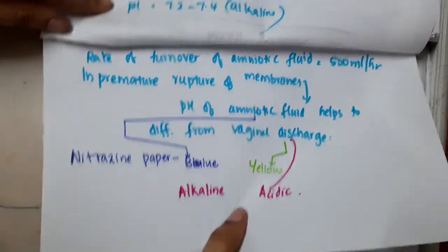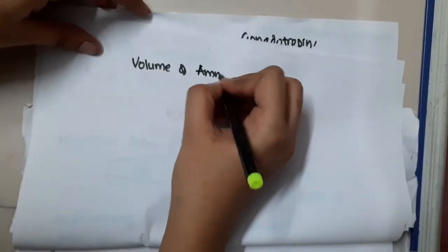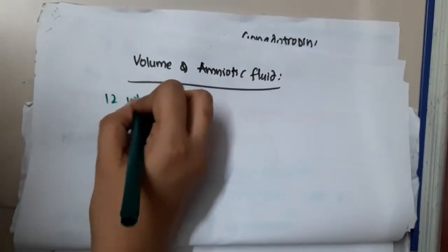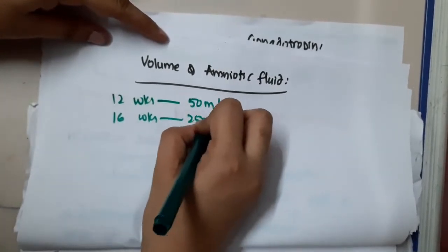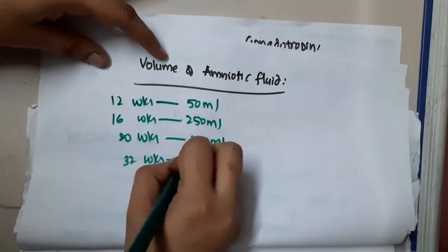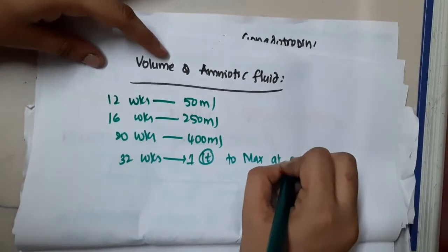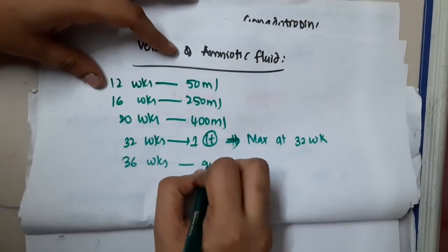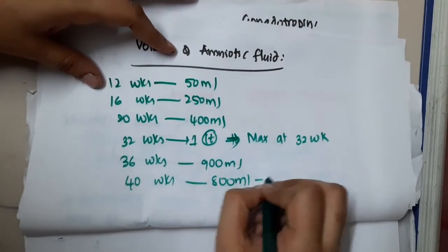The volume of amniotic fluid: at 12 weeks of gestation it is 50 ml, at 16 weeks it is 250 ml, at 20 weeks it is 400 ml, at 32 weeks it is 1 liter which is the maximum, at 36 weeks it is 900 ml, and at 40 weeks it is 800 ml, that is at term.